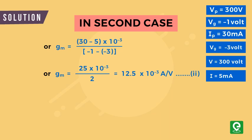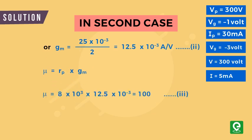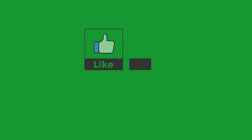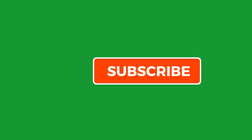Finally, we know that the amplification factor is equal to plate resistance times trans-conductance. Thus we get μ = 100.